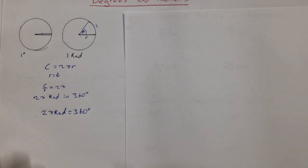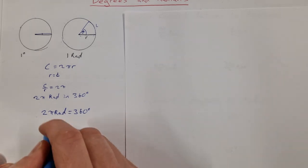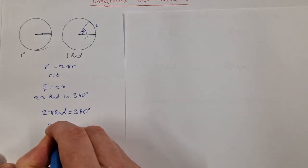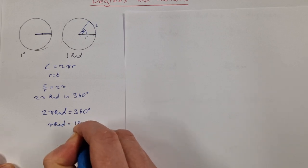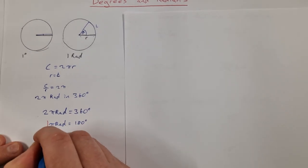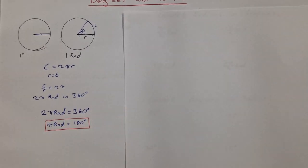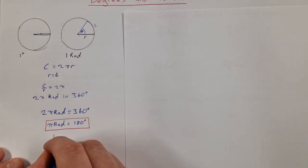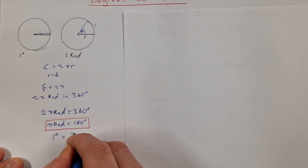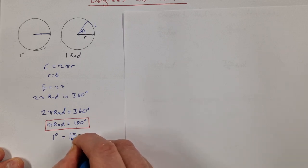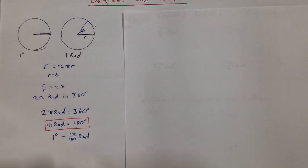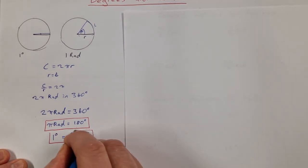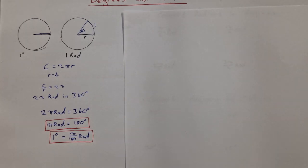I like to simplify this down: dividing both sides by 2 gives π radians equals 180 degrees — that's the first formula I remember. The second formula: dividing both sides by 180 gives 1 degree equals π over 180 radians. If you remember these two formulas you'll be able to convert any angle from radians to degrees or degrees to radians.